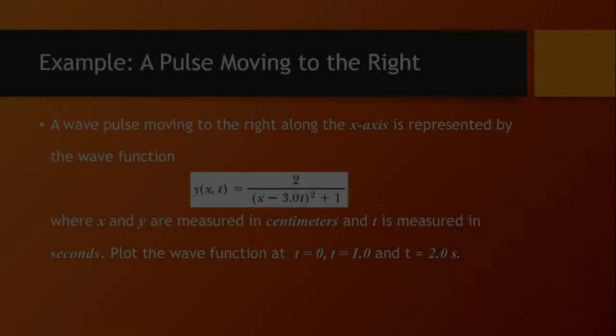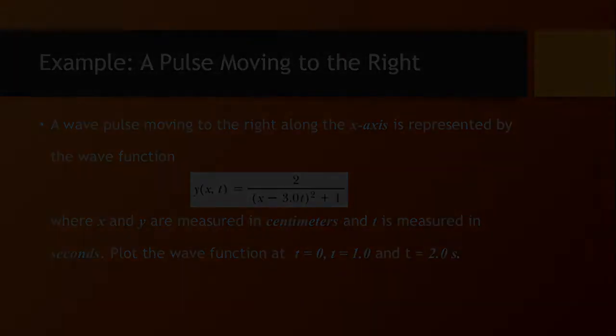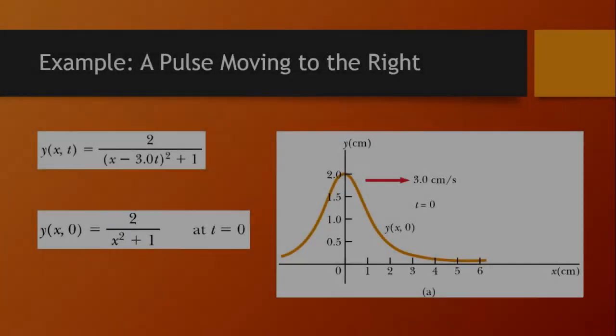Now let's see an example. A wave pulse moving to the right along the x-axis is represented by the wave function shown. Here, x and y are measured in centimeters and t is in seconds. We have to plot the wave function at time 0, 1 second, and 2 seconds.